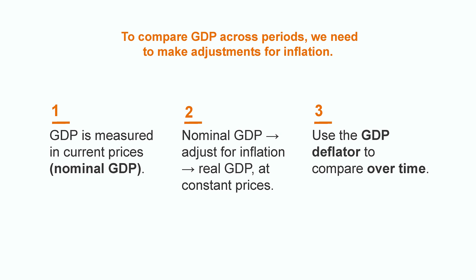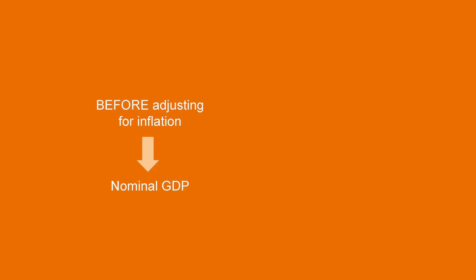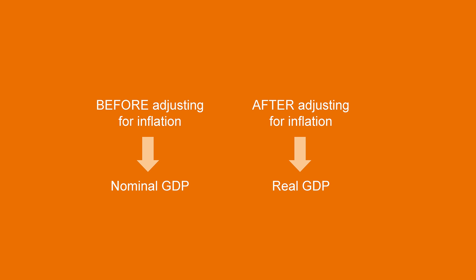The GDP deflator is based on how all prices in the economy evolve over time. Contrary to usual consumer price indexes, it does not use a basket of goods representative of the consumption of one household, but all the prices of all the goods and services in the economy. Before adjusting for inflation, we talk about nominal GDP. After adjusting for inflation, we talk about real GDP. With real GDP, you can compare this year's GDP to the one of the past year. The process of adjusting for inflation is sometimes referred to as deflation.